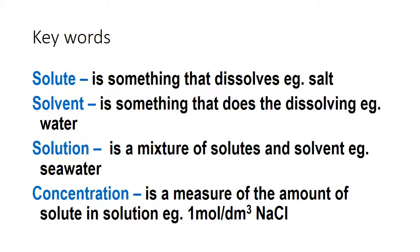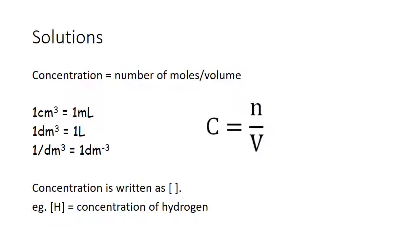Concentration equals number of moles divided by volume. 1 cm³ equals 1 mL; 1 dm³ equals 1 litre; 1/dm³ is dm⁻³. Concentration is always written using square brackets — for example, [H] is the concentration of the hydrogen atom. Concentration can be written three ways: mol/dm³, mol dm⁻³, or capital M — all are acceptable.